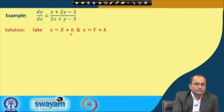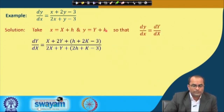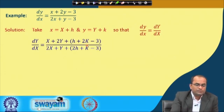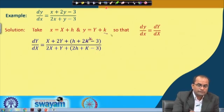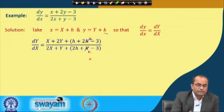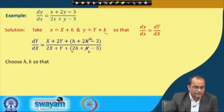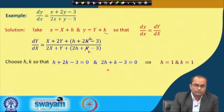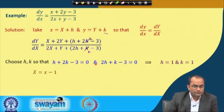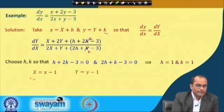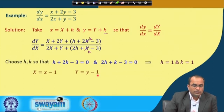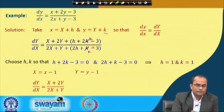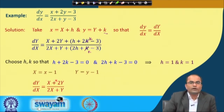We substitute x = X + h and y = Y + k in the equation. The constant terms give h + 2k − 3 = 0 and 2h + k − 3 = 0. Setting both equal to zero and solving, we get h = 1 and k = 1, which satisfies both equations. So our substitution is X = x − 1 and Y = y − 1. Substituting makes the constant terms vanish and leaves us with a homogeneous equation we know how to solve.